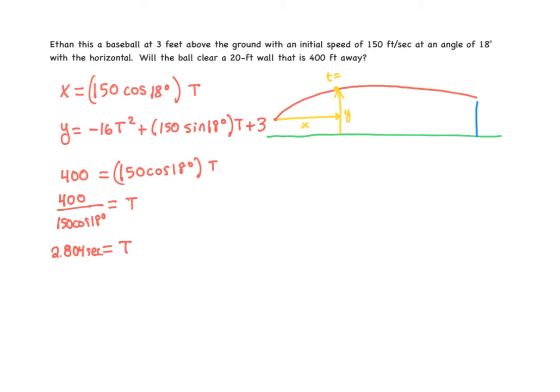And again, if you want the most accurate answer, store that in your calculator. And then to find the height or the vertical position of the ball at 2.804 seconds when it reaches the wall, which is 400 feet away, I'm just going to plug that t value into my y equation. So that's what that would look like. And that gives us, if you type that into your calculator, a value of about y equals 7.178 feet.